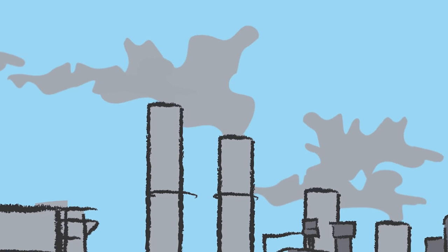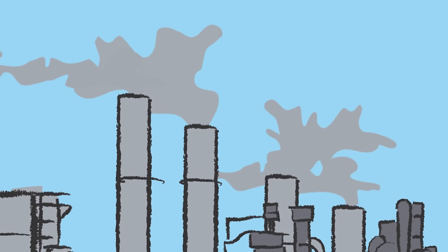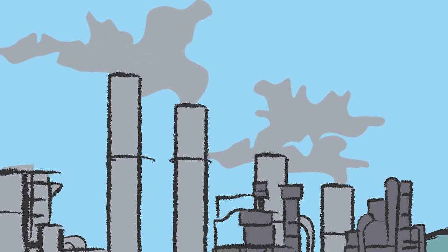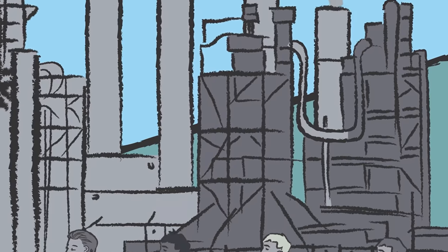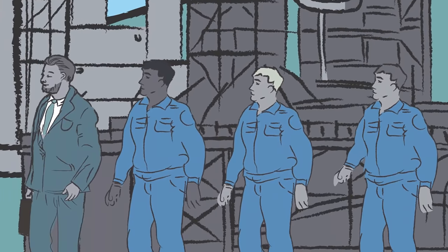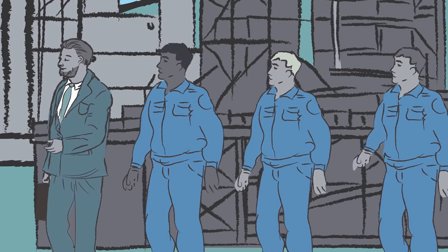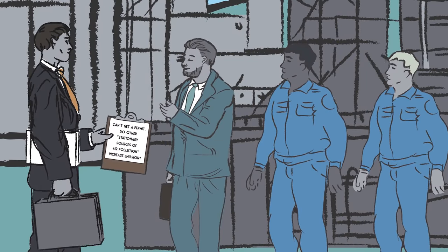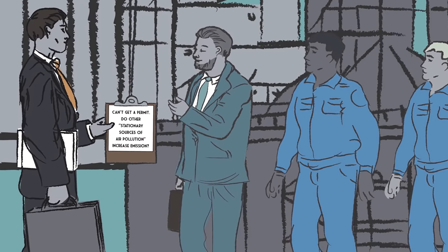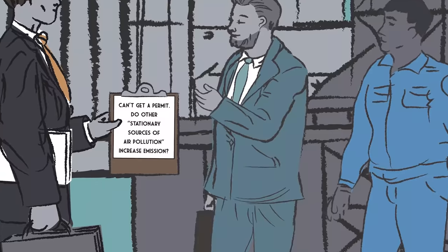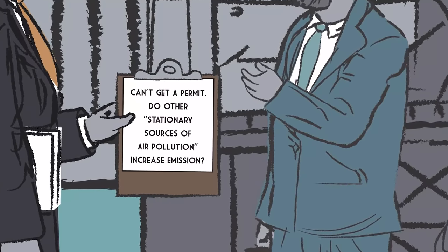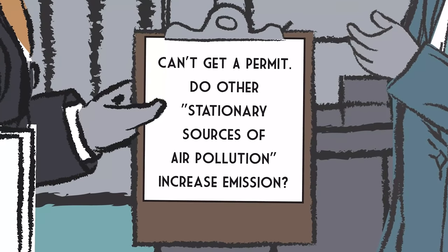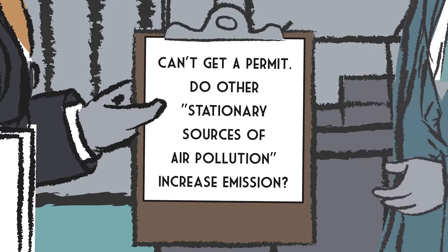But smokestacks six, seven, and nine will have slightly more stuff coming out of them at the end. That's all offset by the fact that we've shut down the two lousy smokestacks, but we'd like to get a permit to allow us to do this. If a stationary source means every single opening out of which pollution comes, they can't do it — because if smokestacks six, seven, and nine are going to be higher after this plan than before, you can't give them a permit for it.